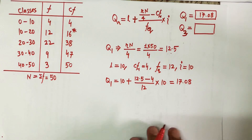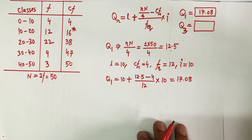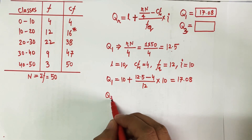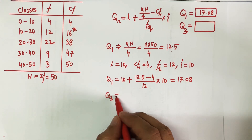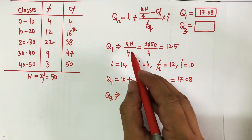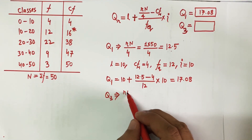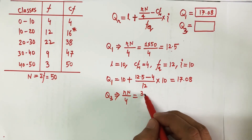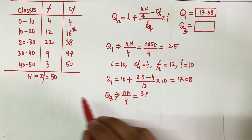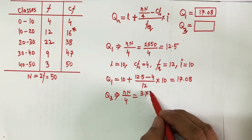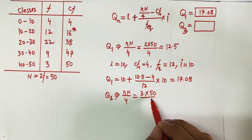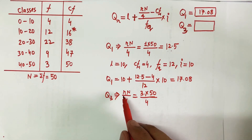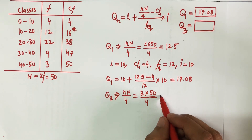Now let's calculate Q3. The concept remains the same, but instead of 1×N/4 we calculate 3×N/4. Since I am calculating the third quartile, r equals 3. So r×N/4 = 3×50/4 = 37.5.